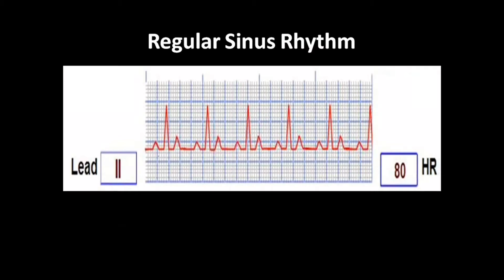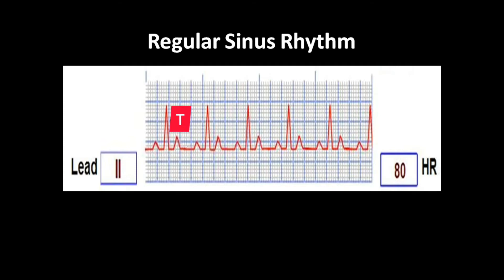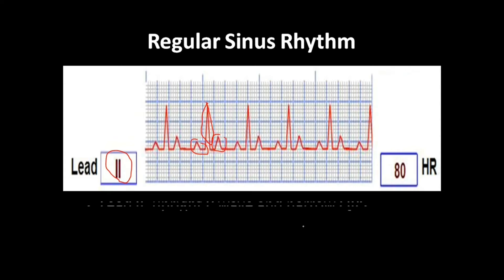For regular sinus rhythm, you can see the different waves like a P wave, a QRS complex, and a T wave. There will be an isoelectric line, and again there will be a P wave, QRS complex, and a T wave. This pattern will be repeating in a regular rhythm. This is what we can see in lead 2, and the heart rate will be at around 80 beats per minute.